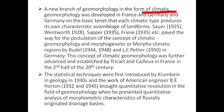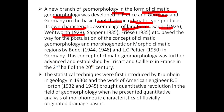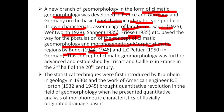A new branch of geomorphology in the form of climatic geomorphology was developed in France and Germany, based on the basic tenet that each climatic type produces its own characteristic assemblage of landforms. Schauer (1925), Walther (1928), Schaeffer (1935), and Credner (1935) postulated the concept of climatic geomorphology and morphogenetic or morphoclimatic regions — further developed by Budel (1944–1948) and L.C. Peltier (1950). This concept was further advanced by Tricart and colleagues in France in the second half of the 20th century.